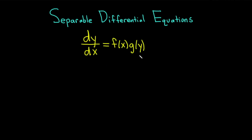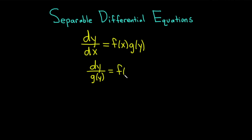A differential equation is separable if you can write it in the form dy/dx equals f of x times g of y. Basically you can separate the variables, and when you have something like this, the strategy is to put all of the y's on one side with dy and all of the x's on one side with dx. For example, we could divide both sides by g of y, giving us dy over g of y, then multiply both sides by dx to get f of x times dx. At this point we integrate both sides and go from there.